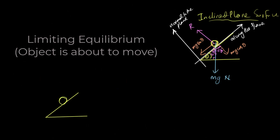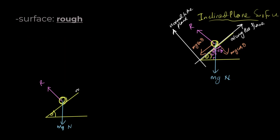You have this object and this angle is theta, and you have weight, so this is mg newtons. You have a reaction force — this will always be the case. Now in this case, if this is a rough surface, that means when you break down this component into normal to the plane and along the plane...